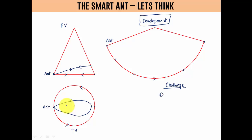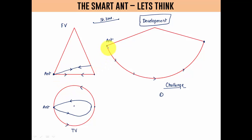Just remember this: if there are two points, the shortest distance between them is a straight line. This is the philosophy we're going to use to work out the track the ant should choose in order to travel the minimum distance. If we plot this on the development, the path would appear as a straight line.